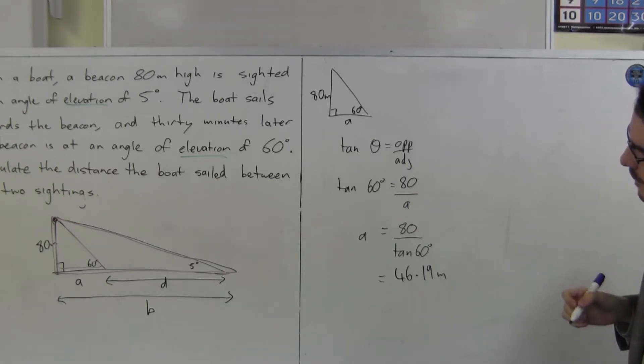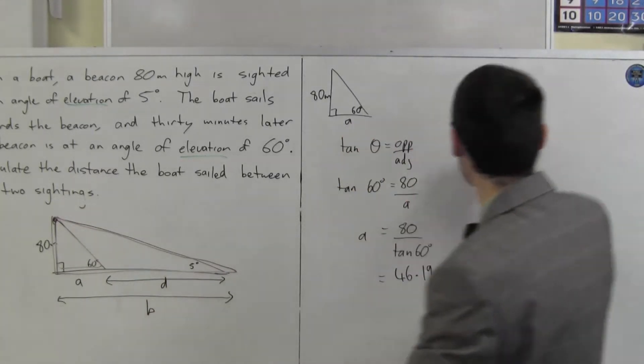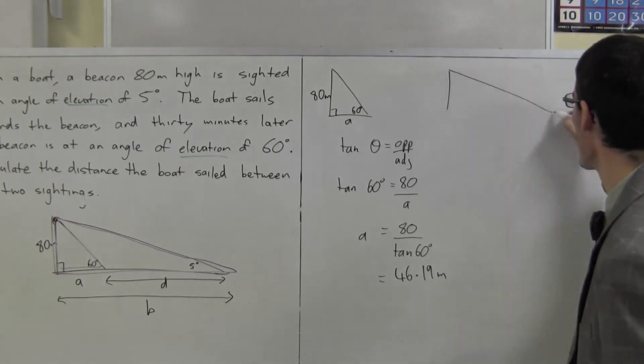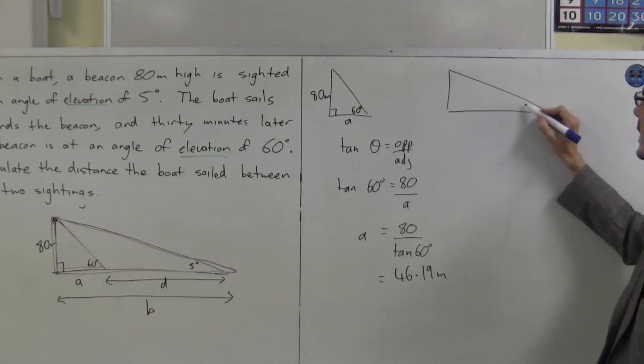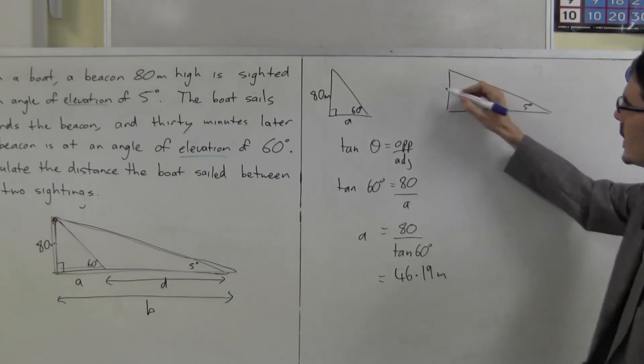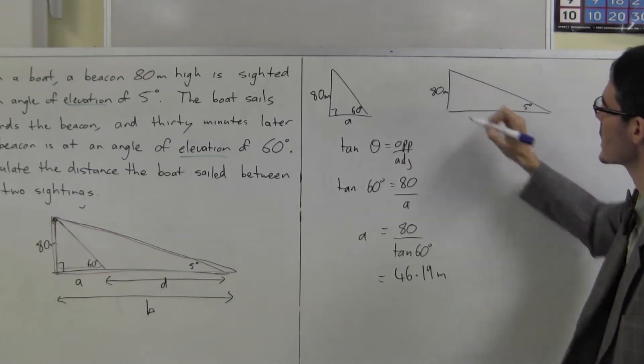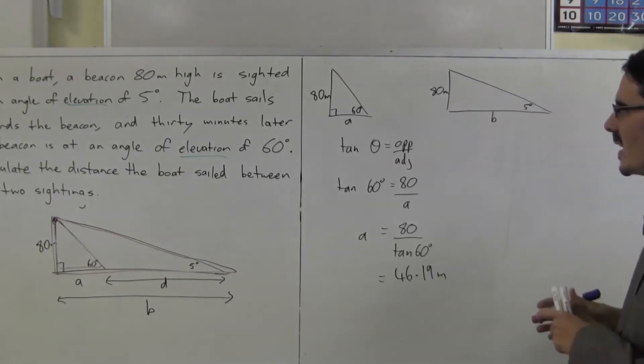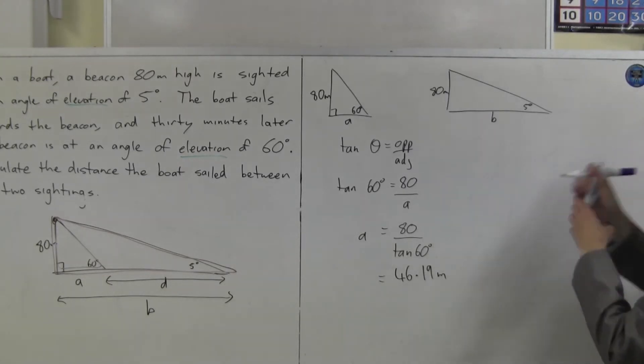Let's try B. B is a larger triangle. But we're going to solve it the same way. This is 5 degrees. Still 80 metres. And I need B. It's going to be tan again. Right angle, sorry.